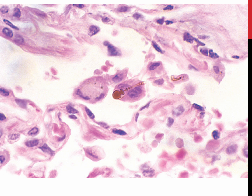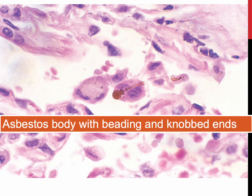Another characteristic feature is the presence of asbestos bodies, which are golden brown, fusiform or beaded rods with a translucent center.